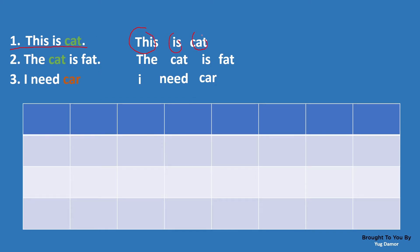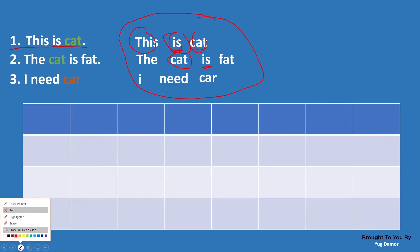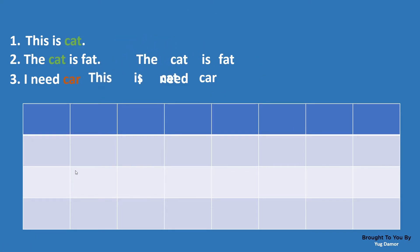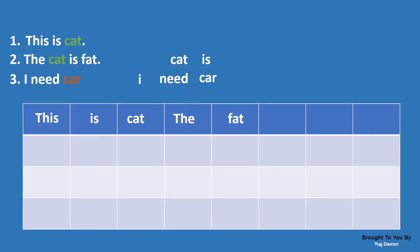We identify the first word, second, third, and so on. Then we will take unique words from all sentences. For example, 'is' is present in multiple sentences, so we will take only one 'is.' Cat is also present in multiple places, so we take one 'cat.' We take all unique words from the first sentence, and from the other sentences we skip any word already present.